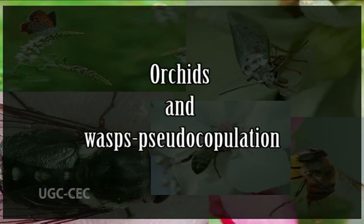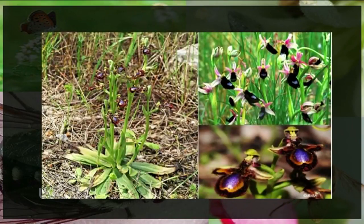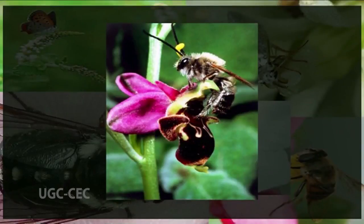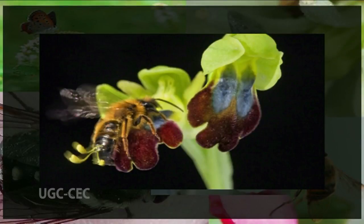Now we see the example of orchids and wasp pseudocopulation systems. A particularly dramatic example of adaptation for pollination is seen in some species of orchids whose flowers resemble in shape, odor, and color the female of certain species of wasps, bees, or flies. The male insect is stimulated to attempt to copulate with the flower and becomes covered with pollen in the process. When he later attempts to copulate with another flower, some of the pollen from the first flower is deposited on the second. So complete is the deception that sperm have actually been found inside the orchid flowers after a visit by the male insect.